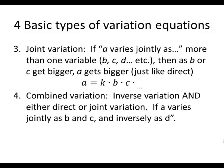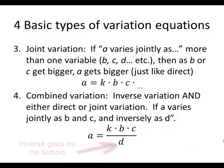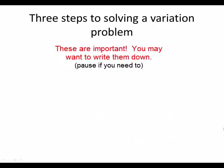And finally, we have something called combined variation, which has inverse variation and either direct or joint variation. So if we say a varies jointly as b and c, and maybe inversely as d, then we could say that a equals k times b times c. Notice we're multiplying by the ones that are jointly varying, and then inversely is division, so we put the d on the bottom.